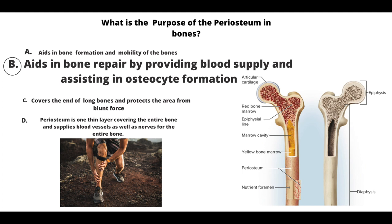As we get older, we have less and less osteoblasts. That's why in the elderly, if they have a bone fracture or break, it's going to be even harder for them to repair that bone because they have less osteoblasts. Also, osteoblasts and osteocytes are not the same thing. Osteoblasts generate new bone cells and osteocytes are already mature bone cells that maintain bone tissue.